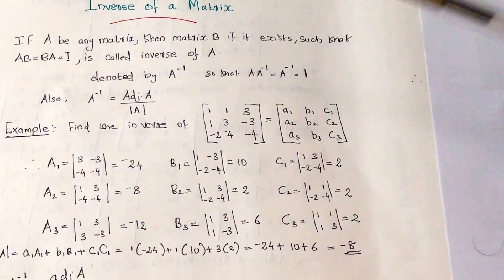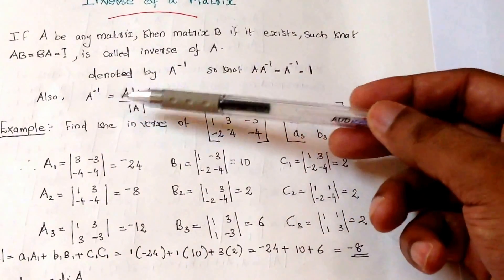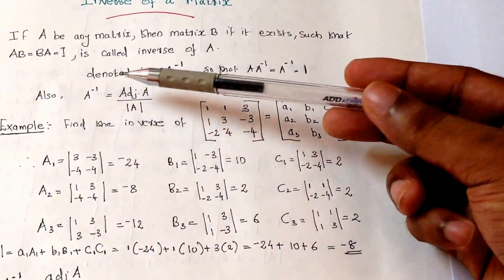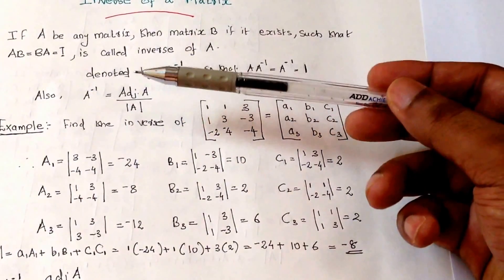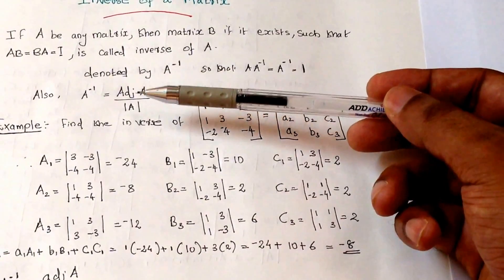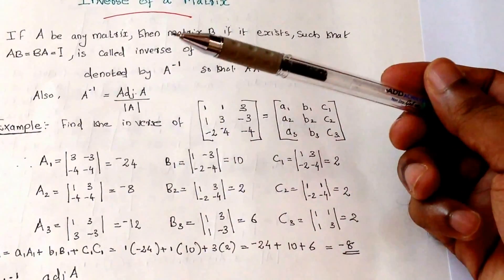The formula for finding the inverse is A inverse equals adjoint A divided by determinant A. For finding the inverse of any matrix, we have to first find the adjoint of the matrix, then divide it by the determinant of that particular matrix.